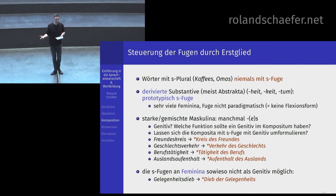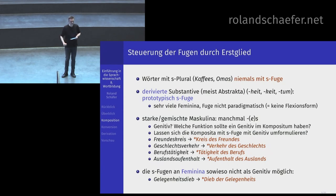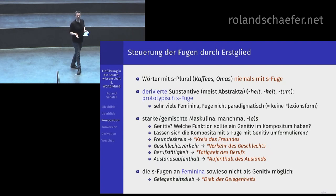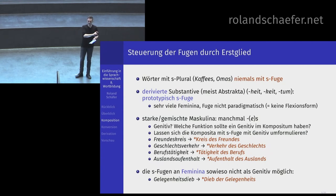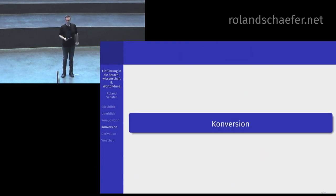Das war nur ein Aspekt – die Genitivhypothese, die man manchmal vorgelegt kriegt. Historisch kann man sich fragen: warum haben wir so viele Komposita im Deutschen? Das hat historische Gründe – das waren tatsächlich mal Genitivkonstruktionen. Heutzutage hat das mit Genitiv aber nichts zu tun. Wenn Sie das vermischen, kriegen Sie ein Gemuddel. Das eine ist sehr interessant und das andere ist sehr interessant, aber an ganz vielen Punkten macht man sich unglücklich, wenn man es vermischt. Das war die Komposition.